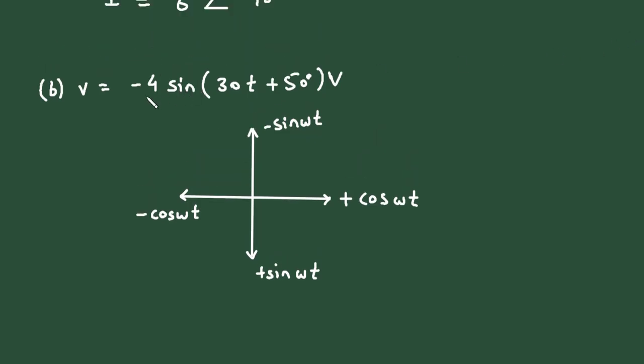Now we want to convert minus sine into plus cosine. So if we go from here to here, the phasor rotates in this direction. Now we are going from here to here, so the angle difference is 90 degrees. That means we can write minus sin ωt is equal to cos(ωt + 90°).